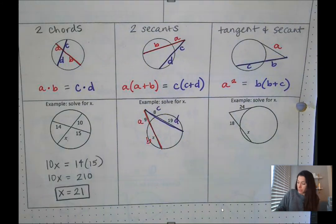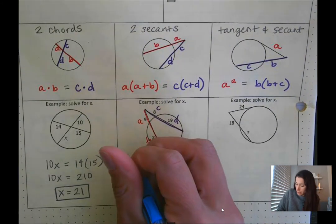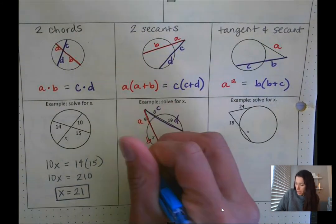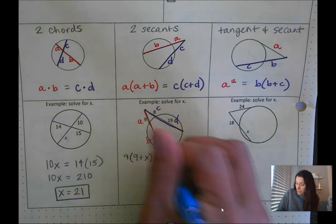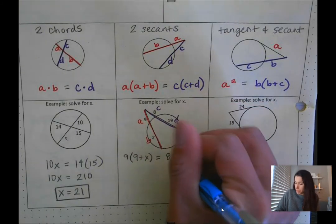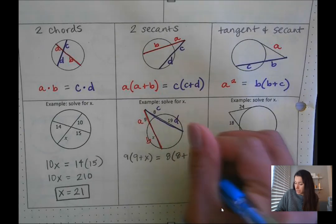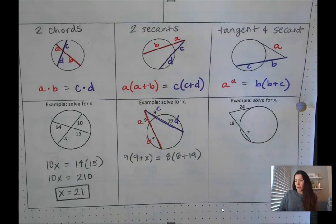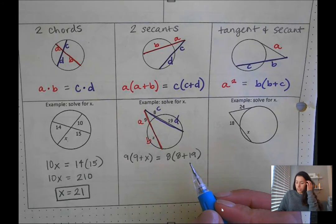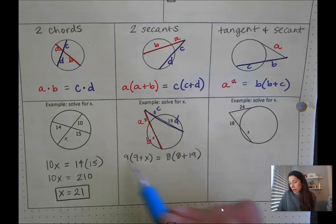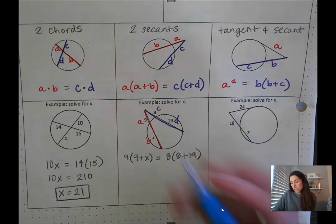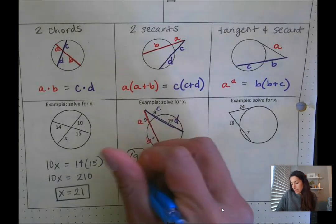We have our outside portion of the segment 9. We're going to multiply that with 9 plus X. Then let's set that equal to the outside portion 8 multiplied with the entire thing 8 plus 19. Now here we can't combine 9 with X so we just need to distribute. So 9 times 9 that's 81. 9 times X that's 9X.